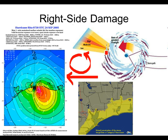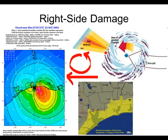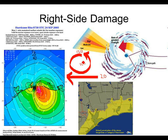If a hurricane is spinning at 100 miles per hour and moving forward at 20 miles per hour, the right side is going to have 120 mile per hour winds — the 100 from the spin plus the 20 from the track. So the right side has much stronger winds. The left side is only going to be 80 miles per hour — you subtract that 20. So the right side is far more damaging.